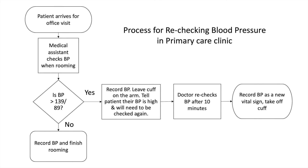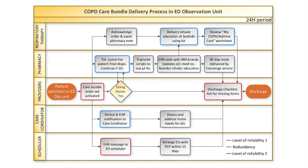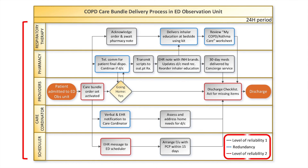Let's look at two more examples. The team in this clinic wants to introduce a new process of rechecking blood pressure if the first reading was elevated. After multiple PDSA cycles, this is their new process: after checking the first blood pressure there is a decision point — is the blood pressure within normal limits or not? The operator will make that judgment and decide how to proceed. Next is an example of delivering a five-component COPD care bundle in the ED observation unit. This process involves multiple people who need to complete their interdependent tasks to deliver the bundle. The tasks of each member can be identified in separate rows or swim lanes, and the level of reliability of each step is also mentioned.